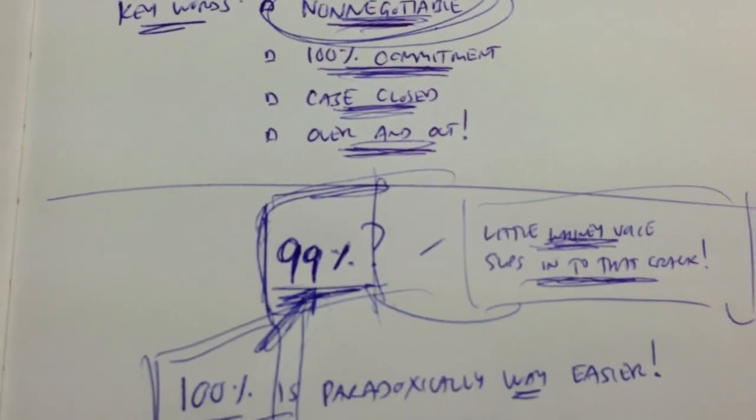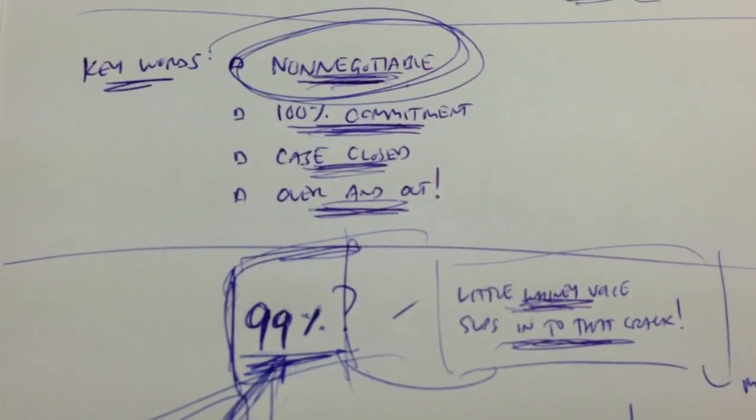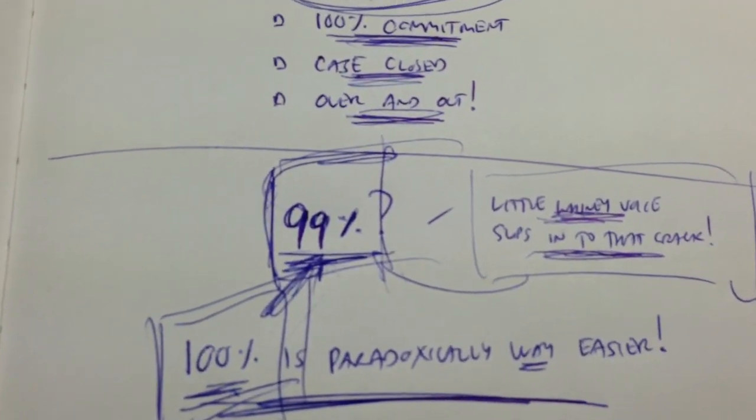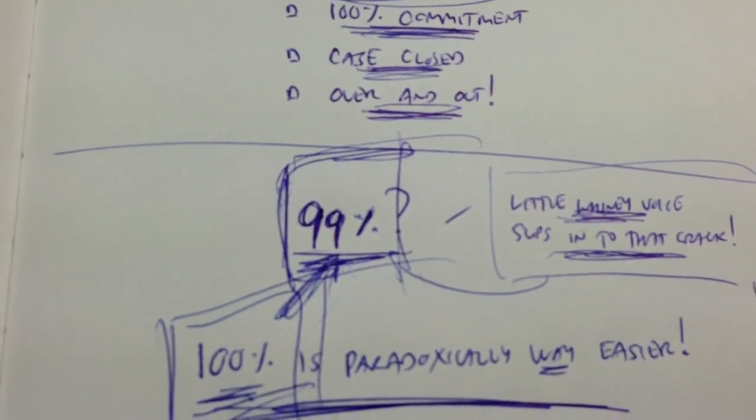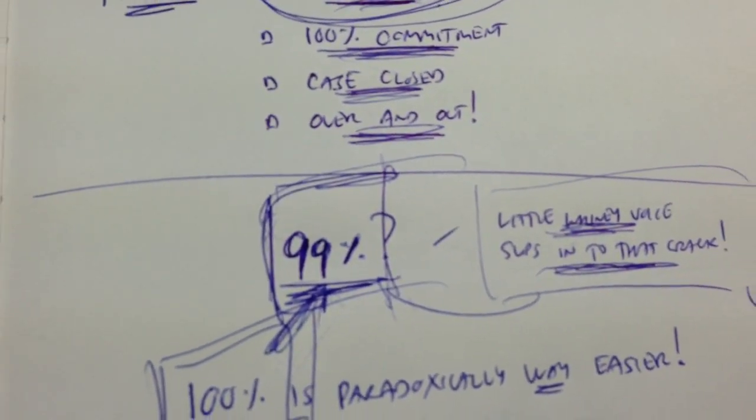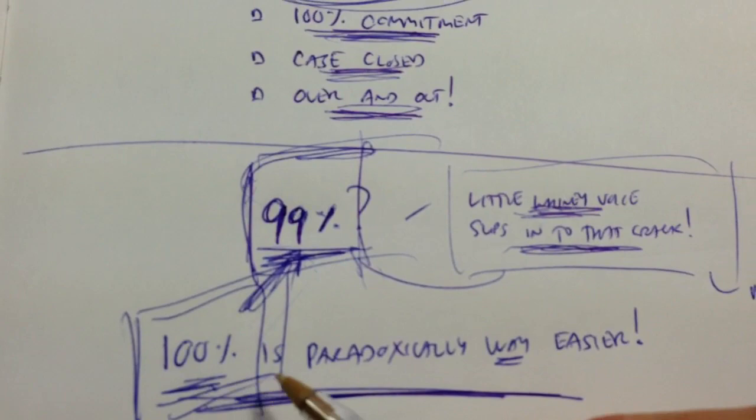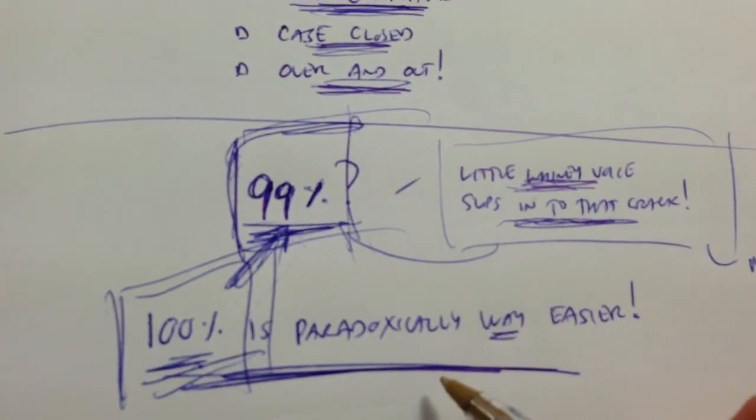I said I'm going to meditate every day and I'm going to meditate. I said I'm going to exercise for at least 10 minutes of walking a day and that's what I do. It's 100% commitment. So 100% is paradoxically way easier to do.